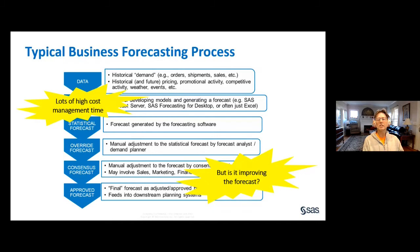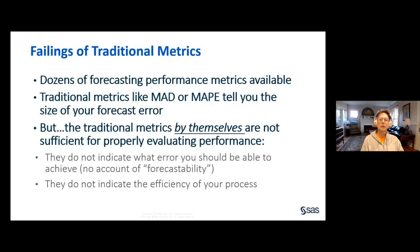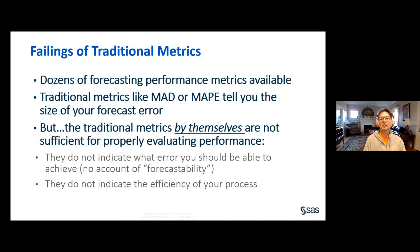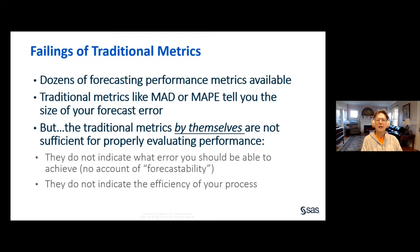Business forecasting can be a highly politicized process where participants inflict their biases and personal agendas on the computer-generated number, especially if what the computer says is not what they want to see. The important question is not what accuracy did our process achieve, but rather: is the process adding value? Are we making forecasts more accurate and less biased? Common traditional metrics like MAD and MAPE by themselves do not answer that question — they tell you the size of your error but don't tell you how efficiently you're achieving the accuracy or whether you're forecasting better than a cheap alternative.